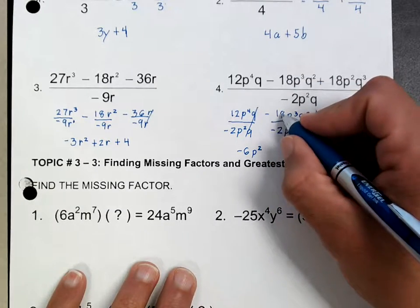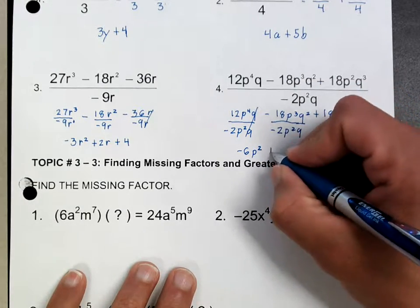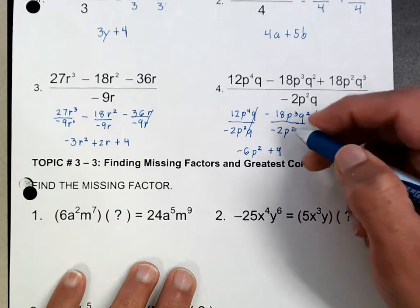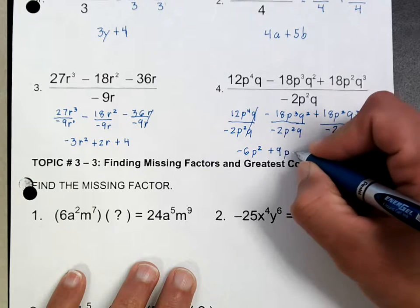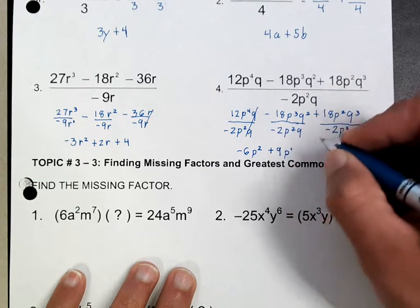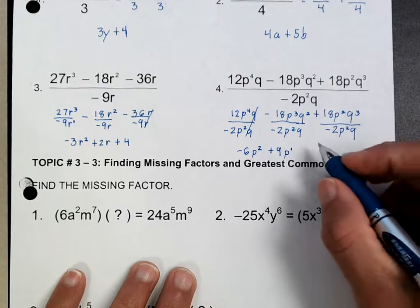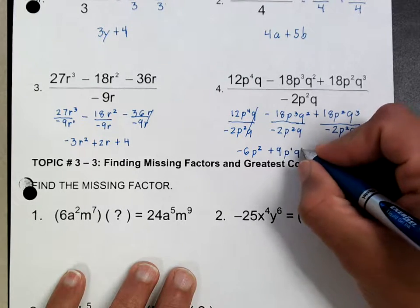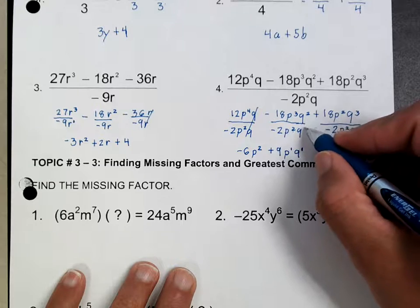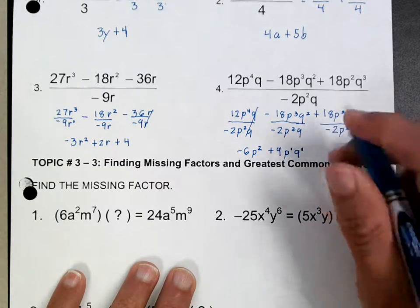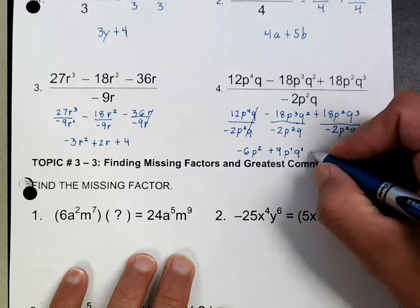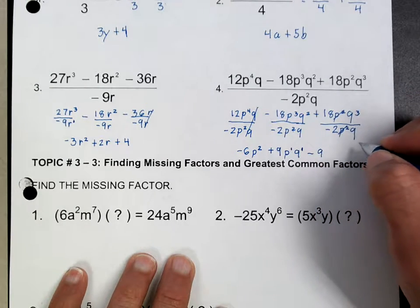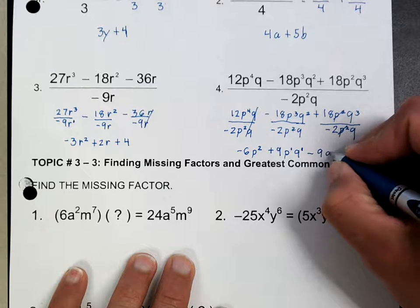On the next term, negative 18 divided by negative 2 is going to be a plus 9. And p cubed divided by p squared is p to the 1st power. Then q squared divided by q will be q to the 1st. Same idea — when you have the same base, you subtract the exponents. And finally in the last one, that would be minus 9. Notice that p squared cancels because they're exactly the same, and you end up with q squared.